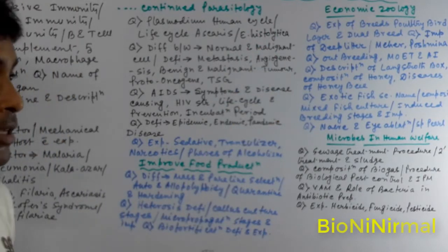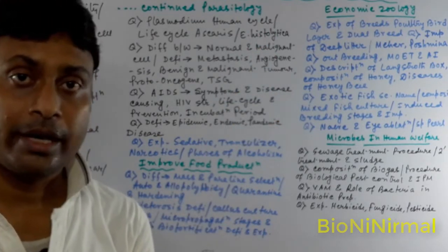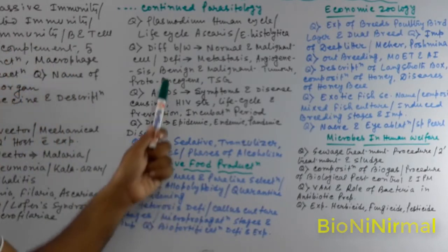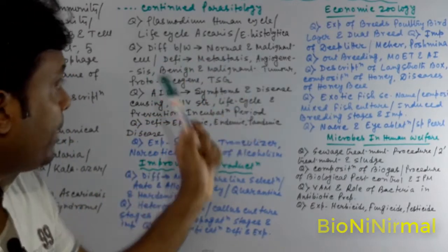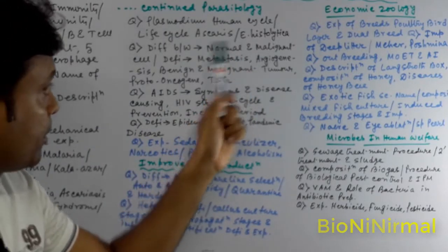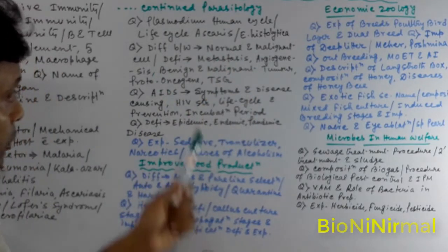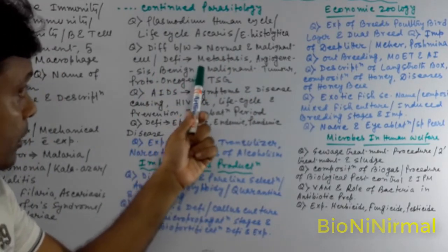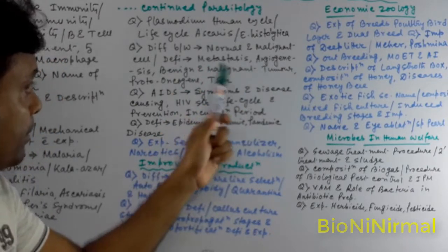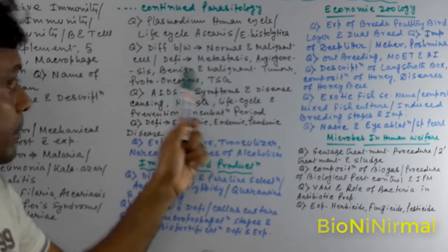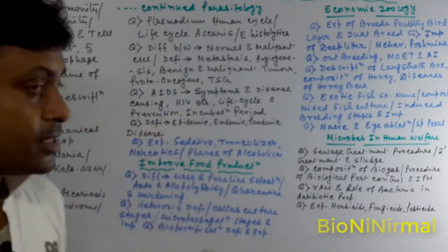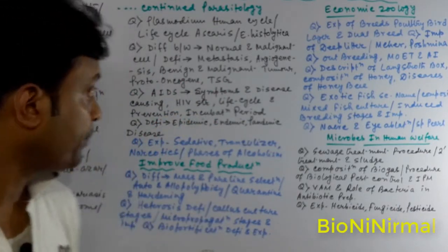This is amoebic dysentery — a protozoan disease. The difference between normal and malignant: we have cancer. The definition of cancer is related to metastasis and angiogenesis, benign and malignant tumors, proto-oncogene and tumor suppressor — with examples.